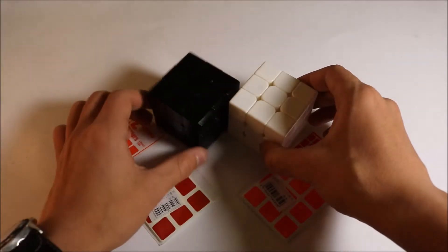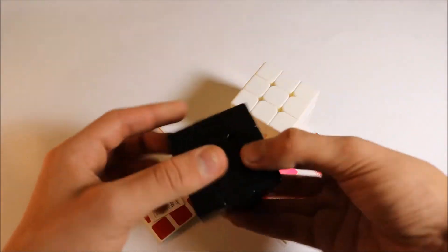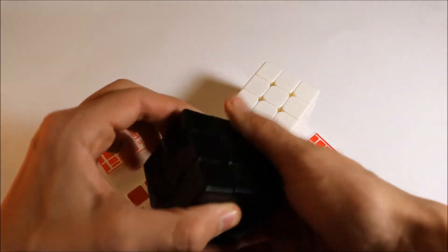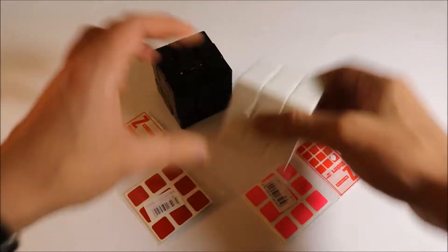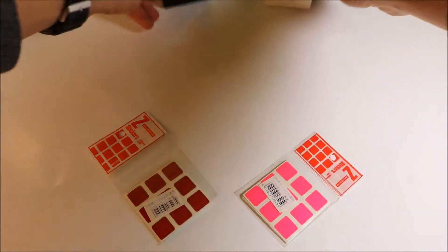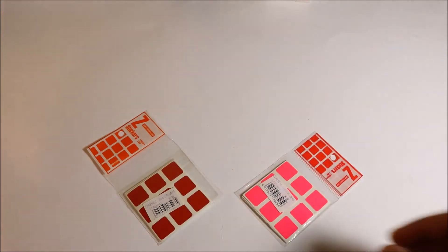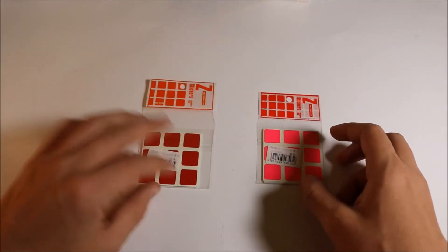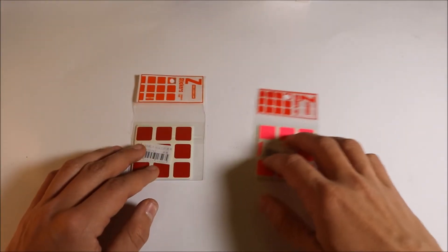All right guys, so now that we have the cubes stripped of their stickers and polished off, we're going to sticker them. But first I'm going to show you the sticker sheets before they're on the puzzle. So we have a half bright set and a full bright set of these Z stickers.